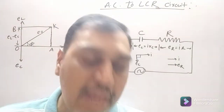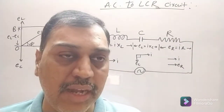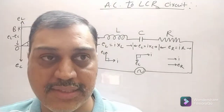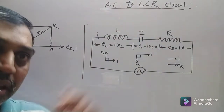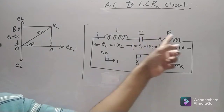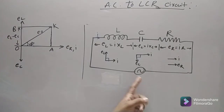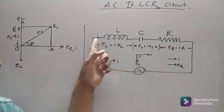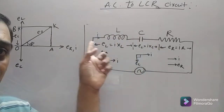In the last session we covered AC applied to inductors and capacitors, finding capacitive reactance and inductive reactance. In this topic we will see AC applied to the LCR circuit. An LCR circuit is one in which L (inductor), C (capacitor), and R (resistor) are connected in series. When AC is applied to their series combination, the circuit is called an LCR circuit. Because they are in series, the same current i flows through each component.